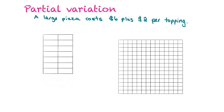We're going to fill in a table of values. N is going to be our number of toppings on the x-axis, and C is our cost in dollars — the dependent variable. So if we didn't get any toppings it costs six dollars, one topping costs eight, two toppings costs ten, three costs twelve, four costs fourteen, and five toppings costs sixteen dollars.